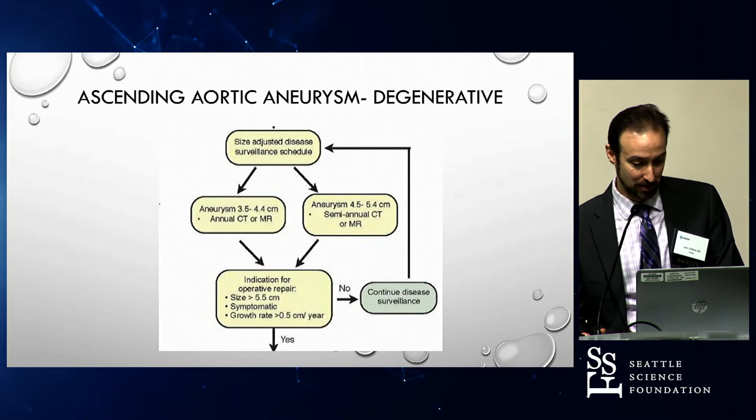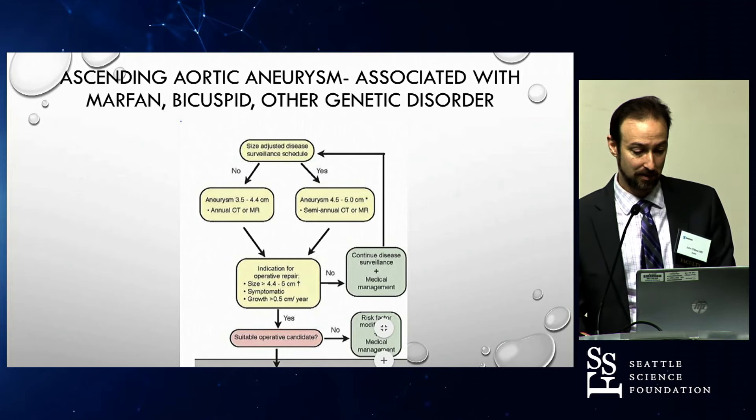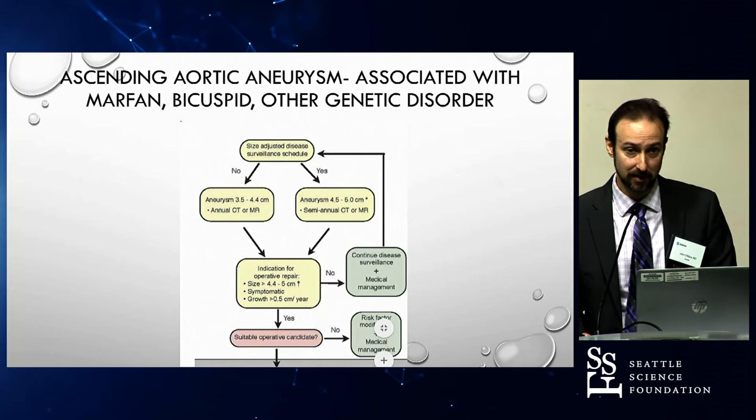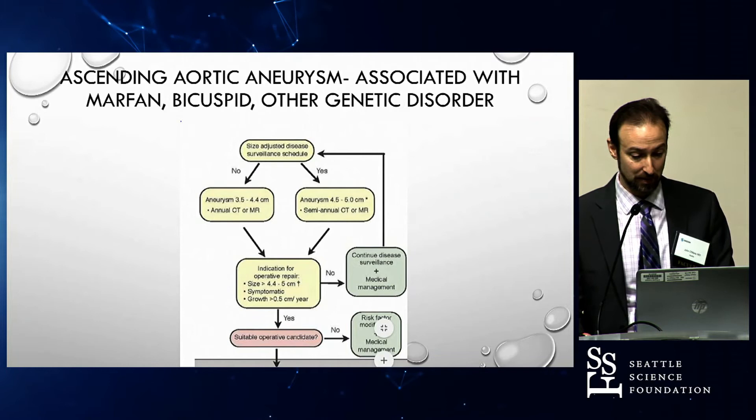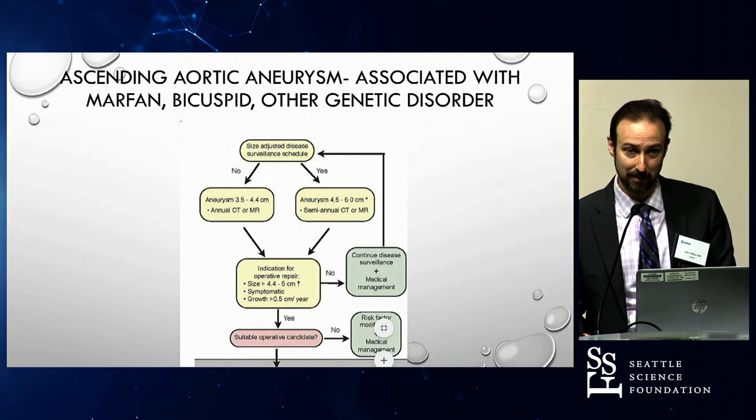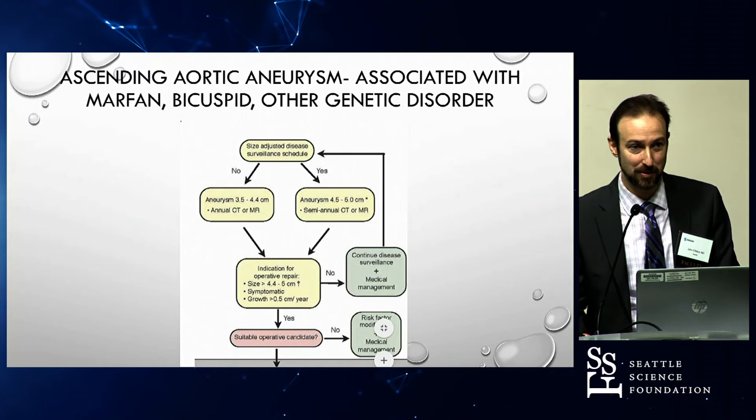For people with bicuspid or other genetic-based disease, the recommendations are slightly different in terms of indications for operative repair. Once you're getting to 4.5 centimeters and they're symptomatic, you definitely want to repair, or if there's rapid growth. So the size threshold for considering repair is slightly decreased. Bicuspid is tricky in terms of when they tend to rupture, as opposed to patients with Marfan's.